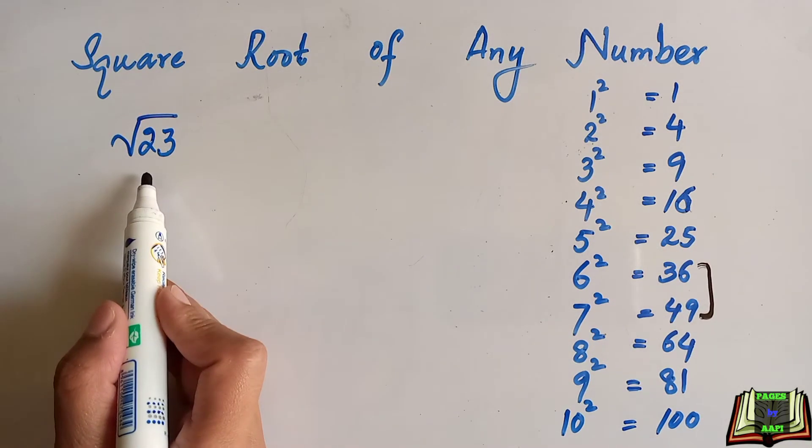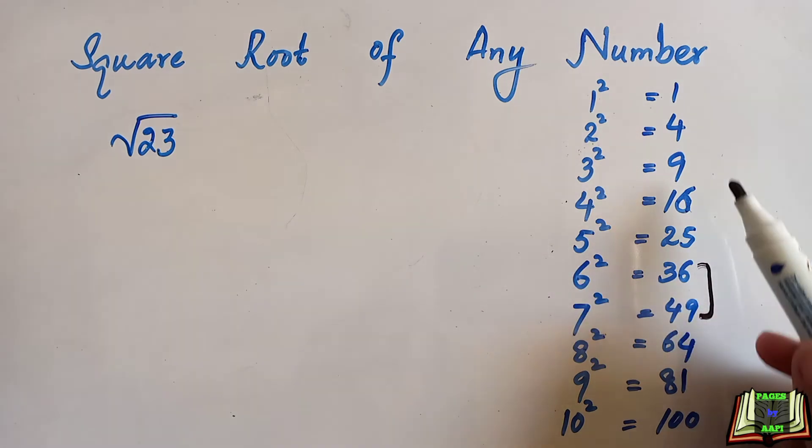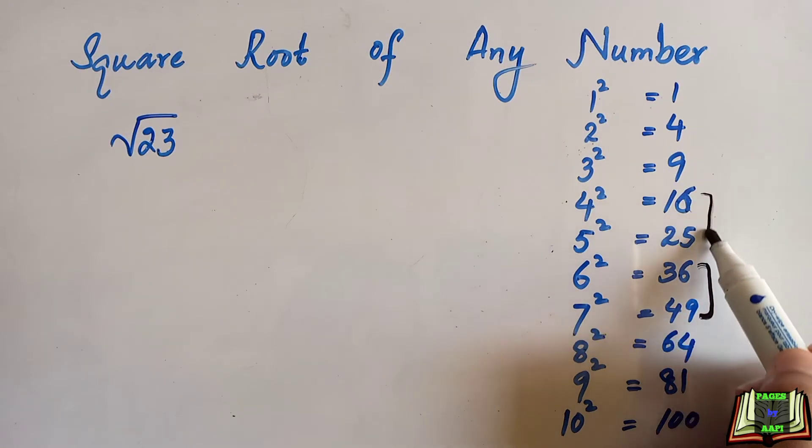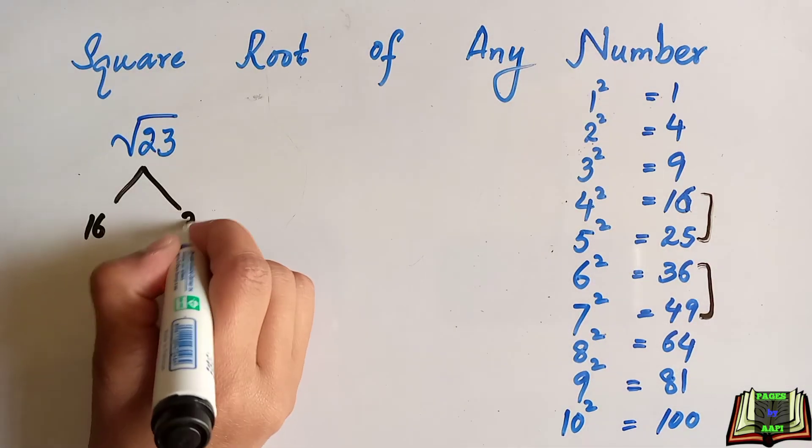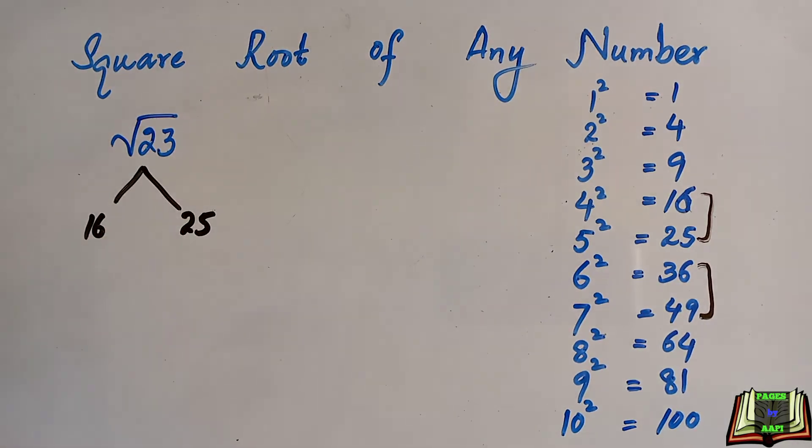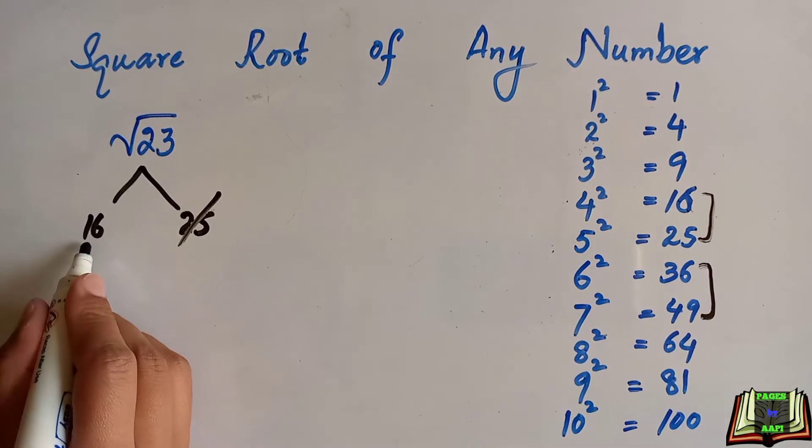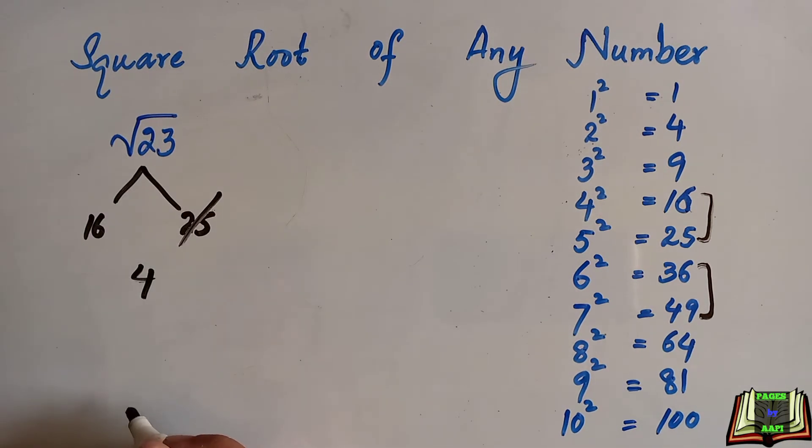Now we have a number 23, which is an imperfect square. First we will find the two nearest perfect squares closer to 23. These are 16 and 25. We will use 16 and ignore 25. We know that 16 is the perfect square of 4.